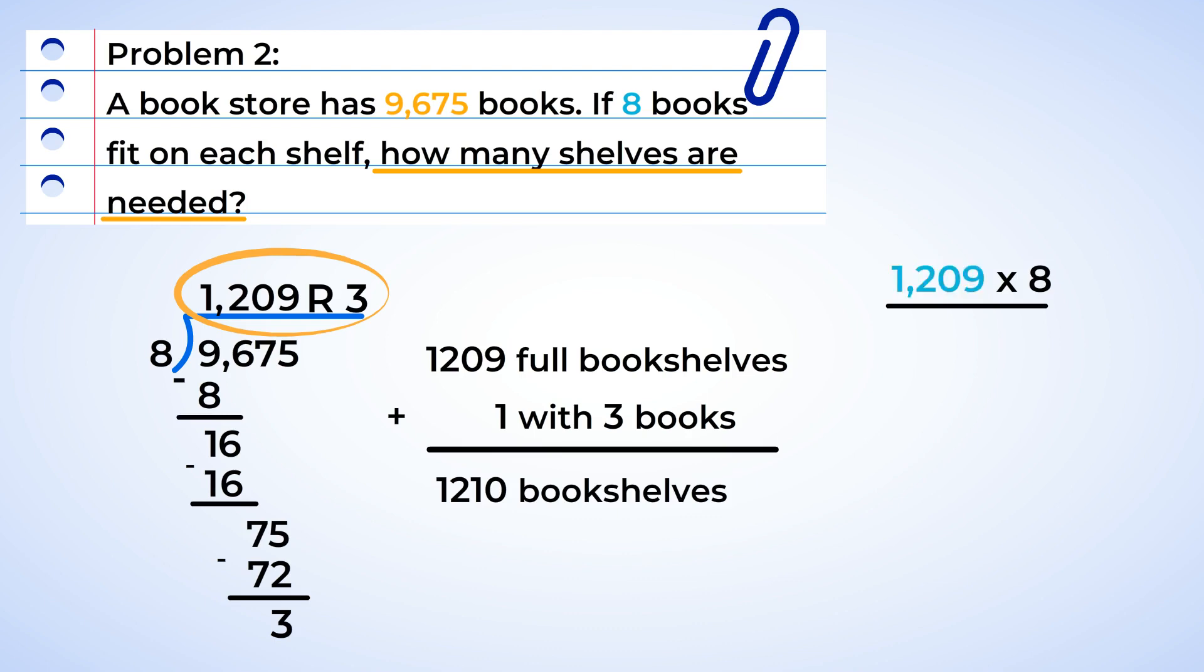So we multiply the quotient 1,209 by the divisor 8. And we add back in the remainder. 1,209 multiplied by 8. We draw the line and let's do it. Start from the 1s. 8 times 9 is 72. Write down 2. Move the 7 tens above the tens column. 8 times 0 is 0 plus 7 is 7. Write 7 tens in the answer. 8 times 2 equals 16. So we write down 6 hundreds and move the 1 above the thousands column. And last step, but not least, 8 times 1 is 8 plus 1 is 9. And the result is exactly what we need. 9,672. When you add the remainder of 3, you have the number of all the books, 9,675.